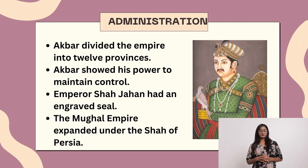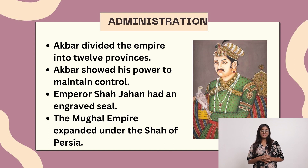Akbar divided the empire into 12 provinces. Akbar showed his power to maintain control. Emperor Shah Jahan had an engraved seal. The Mughal Empire expanded under the Shah of Persia.